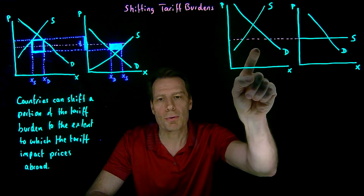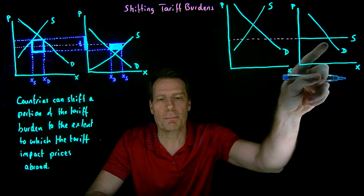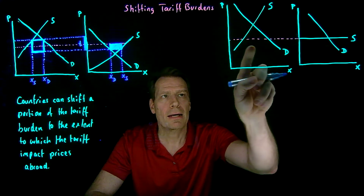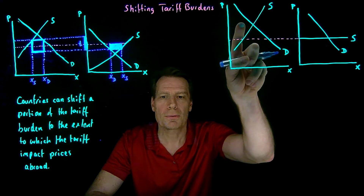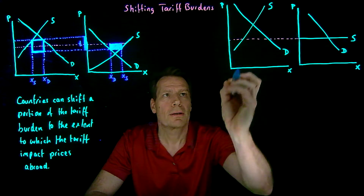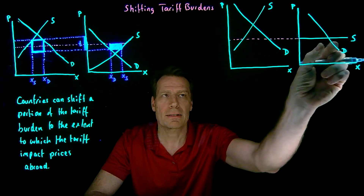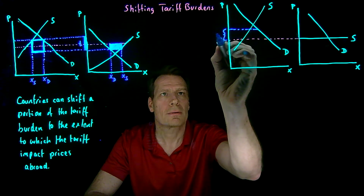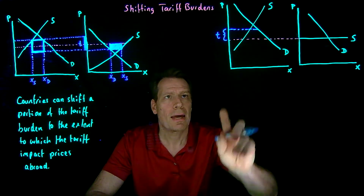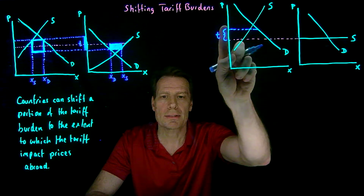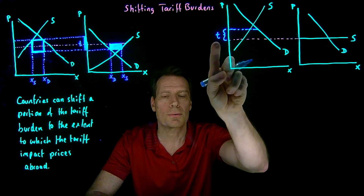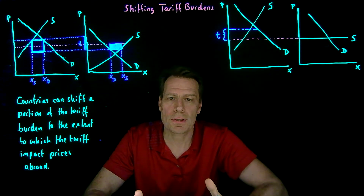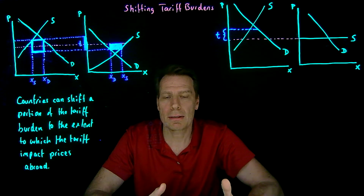Now suppose this country imposes a tariff. Since it cannot affect the price in the exporting country, the entire increase in price will be equal to the per-unit tax. Exporters will buy and sell less here until prices in the importing country rise by the full amount of the per-unit tax — exactly the difference required to compensate exporters for having to pay this per-unit tax.